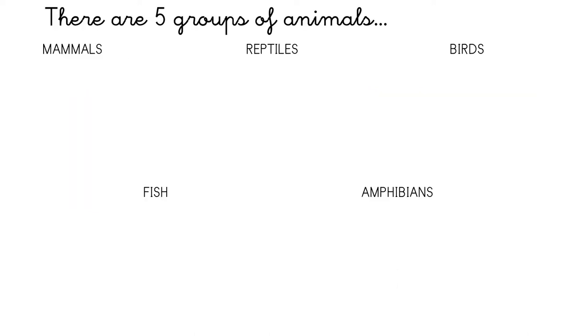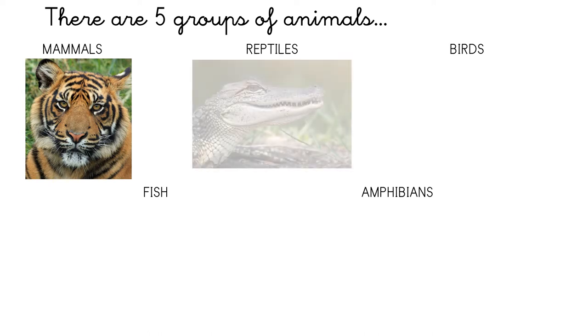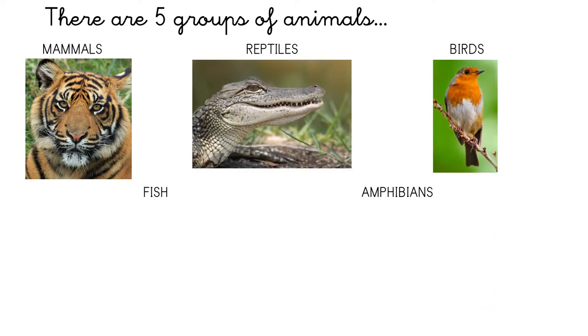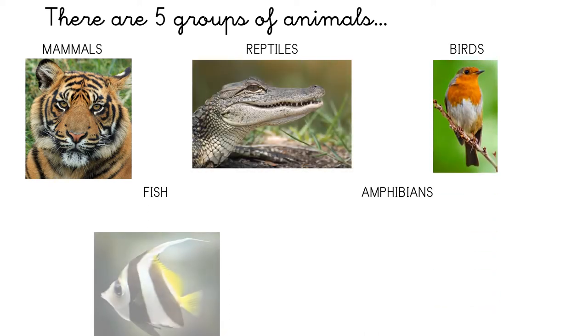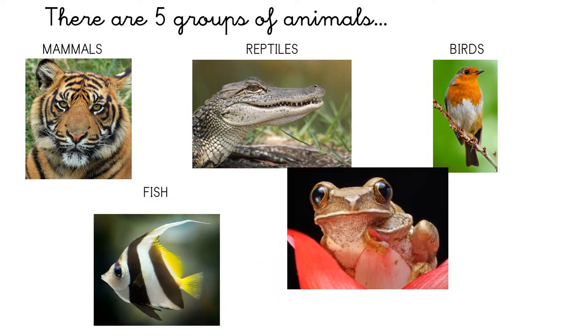There are five groups of animals: mammals, reptiles, birds, fish, and amphibians.